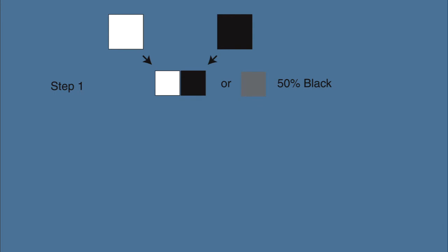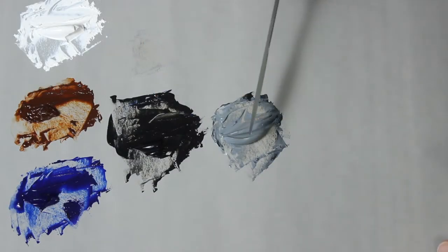This graphic shows what I've created for my first step. I've combined equal amounts of black and white to create a 50 percent gray value. Keep in mind that this 50 percent ratio refers to volume. If I had a different black, I would have had a lighter or darker gray, but it's still 50 percent by volume.